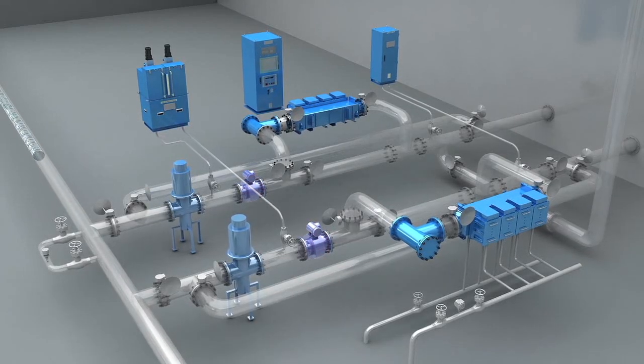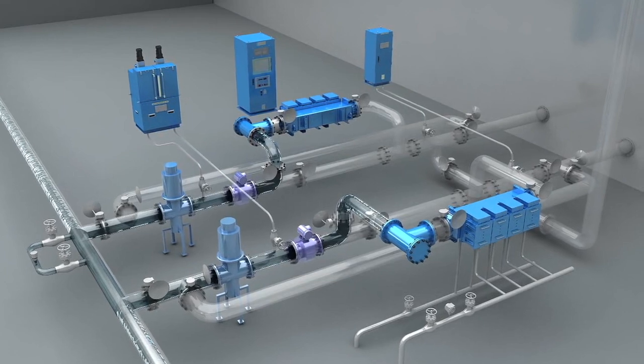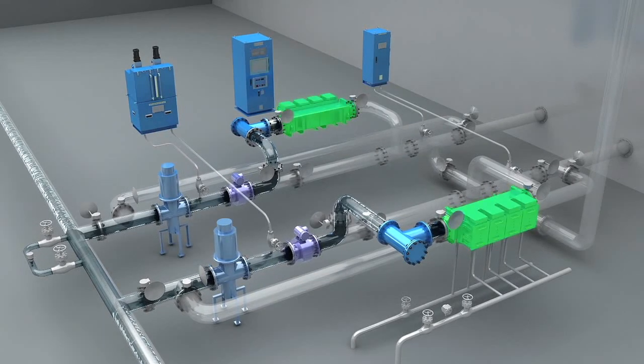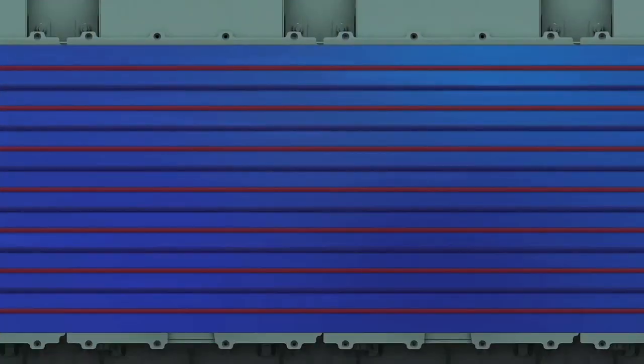As ballast water flows into the vessel, ECU receives the required current and voltage from the rectifier, enabling them to electrolyze the ballast water and kill microorganisms by electrochemical actions.